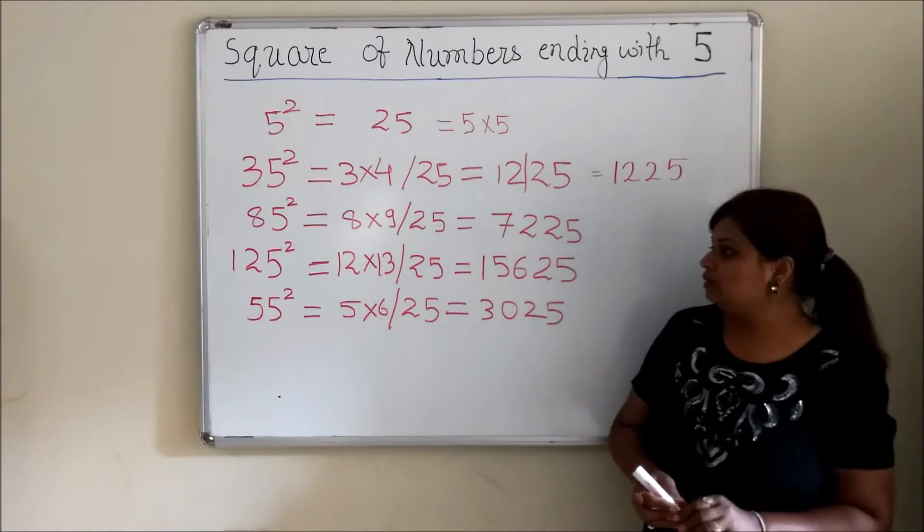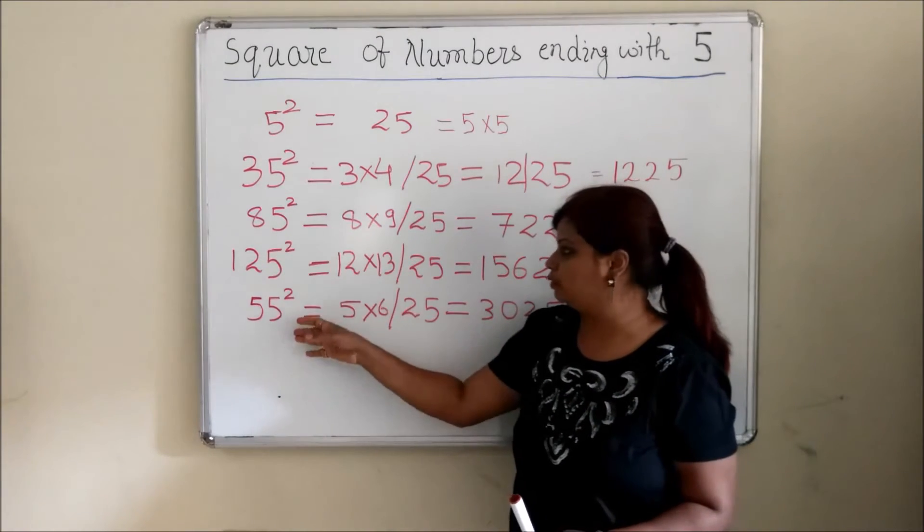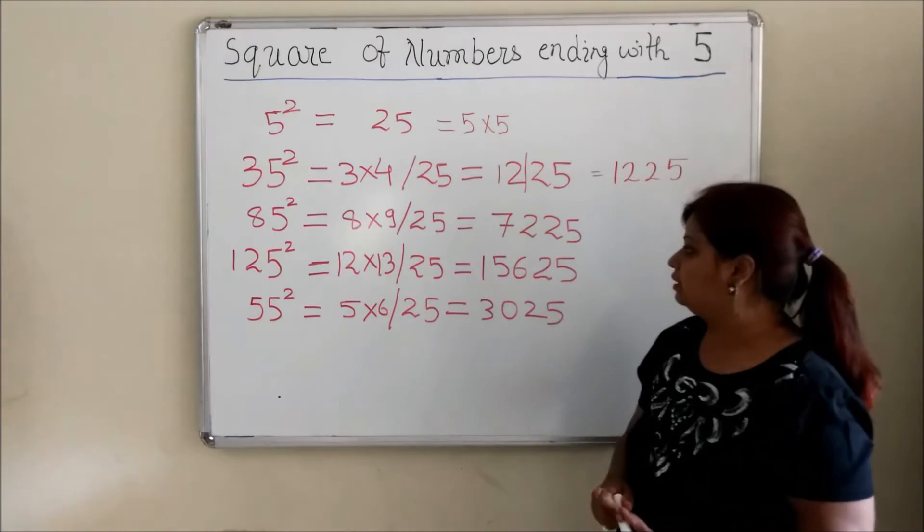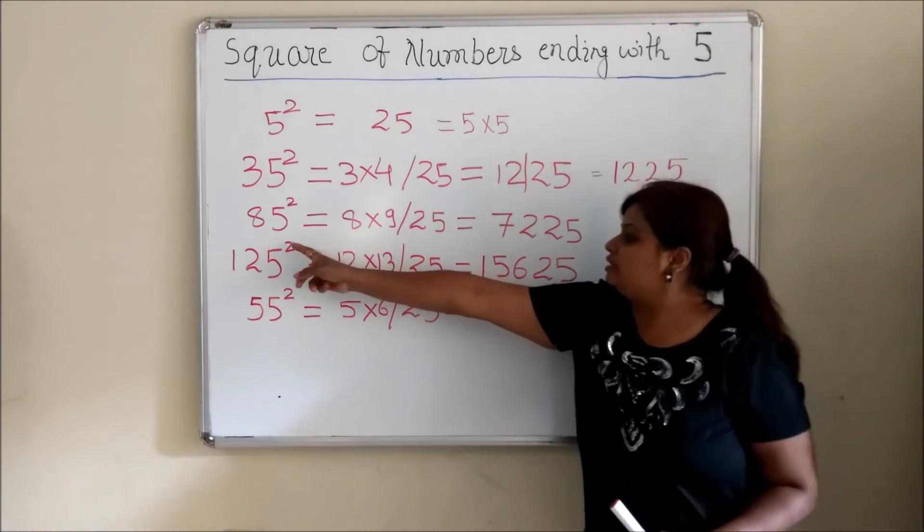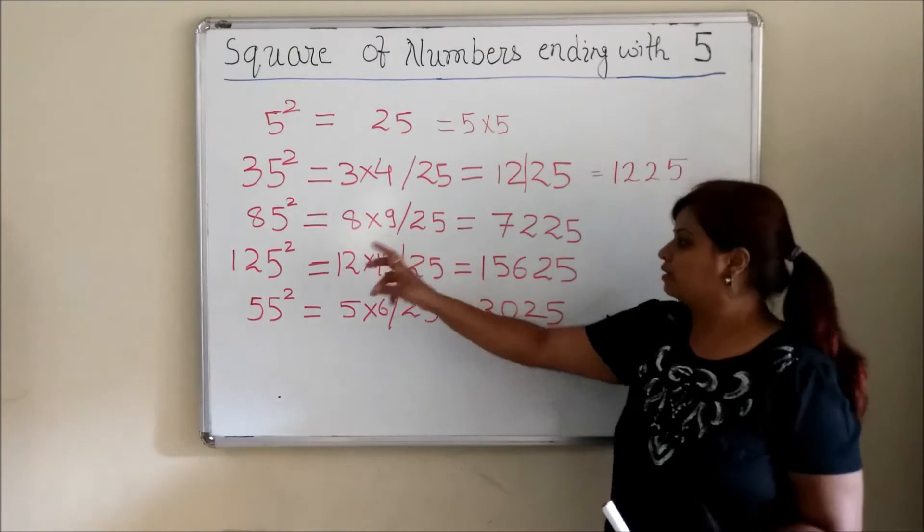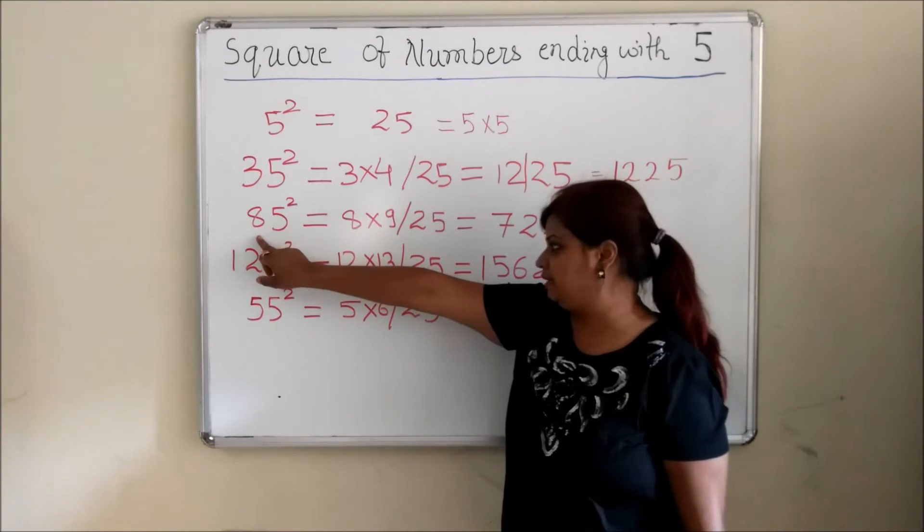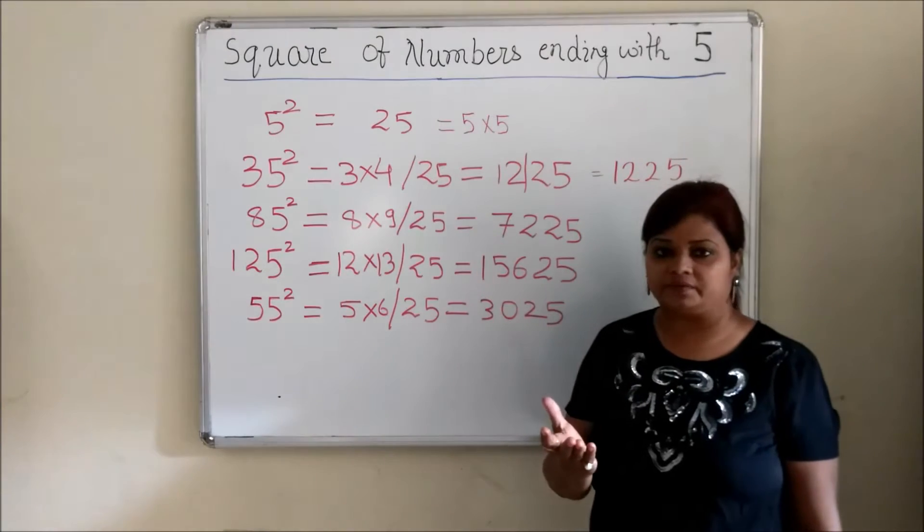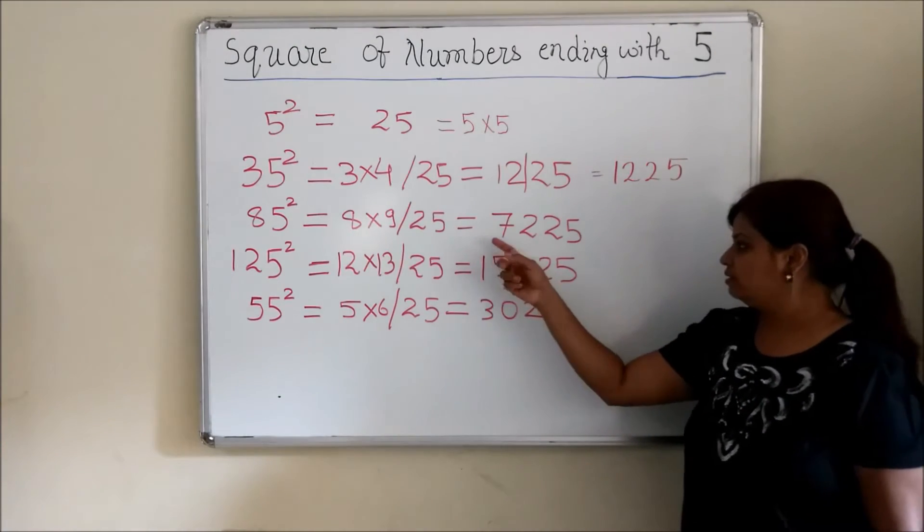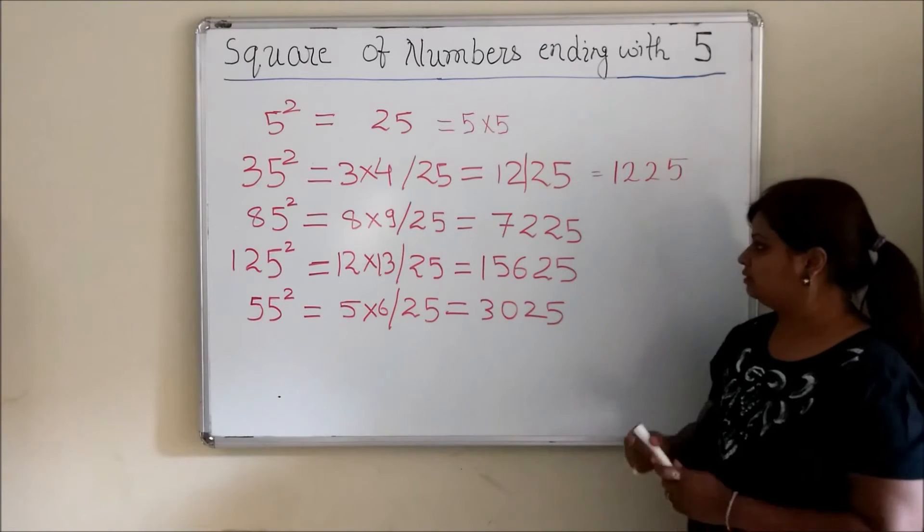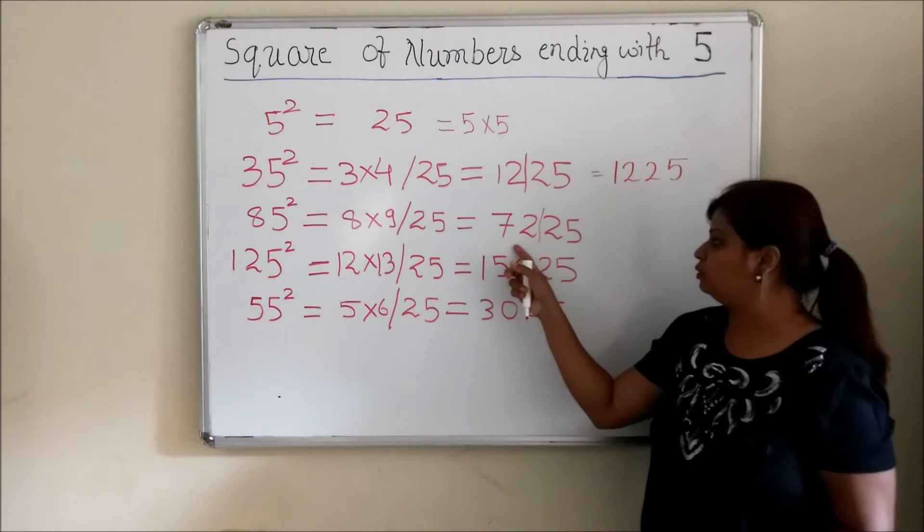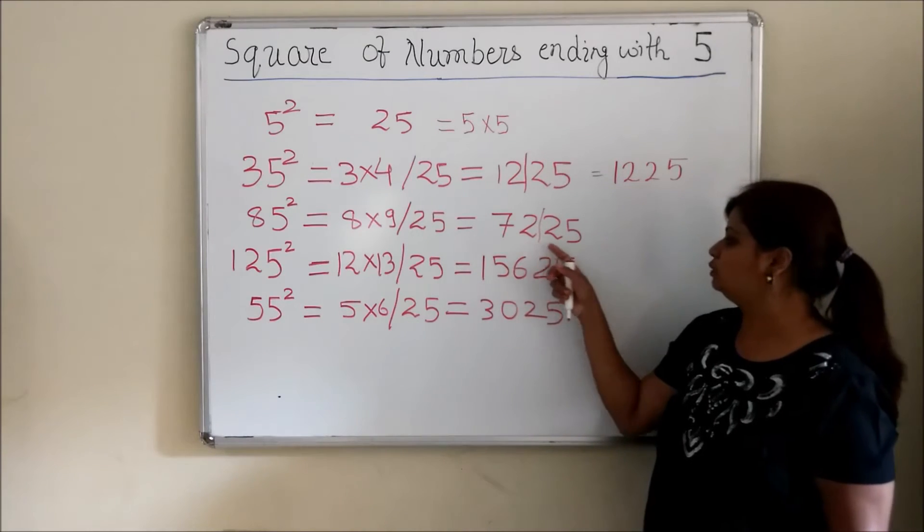Now I have taken few more examples so that it is easy for you to understand. So 85 square I have done here. Again same thing here. First you place the square of 5 which is 25 here. Now what is remaining here is 8. 8 you are multiplying with the next natural number which is 9. So you get 25 you keep it here. And 8 into 9 is 72. You put it here. So 7, 2, 2, 5.